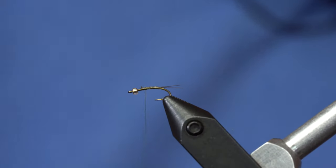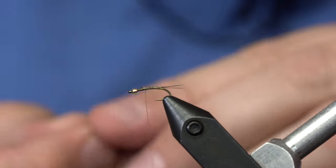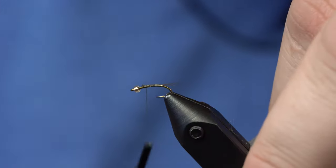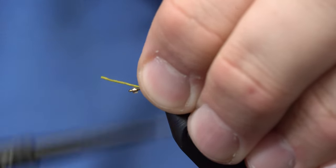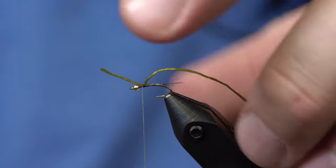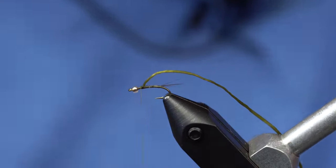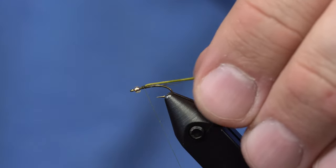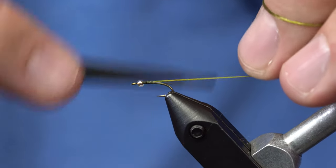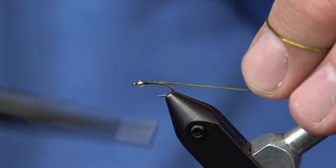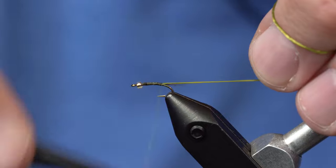For the body I'm just using LifeFlex which is a stretchy material kind of like SpanFlex or any of those flex family of materials. I'm going to tie in a piece of it about right there and I'll pull this excess tight and get rid of it. As I wrap this material in I'm going to pull it pretty tight because I want a pretty slim body and I can use the LifeFlex to help build taper into this fly.